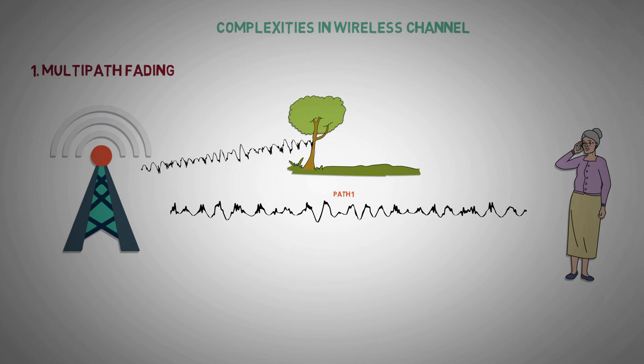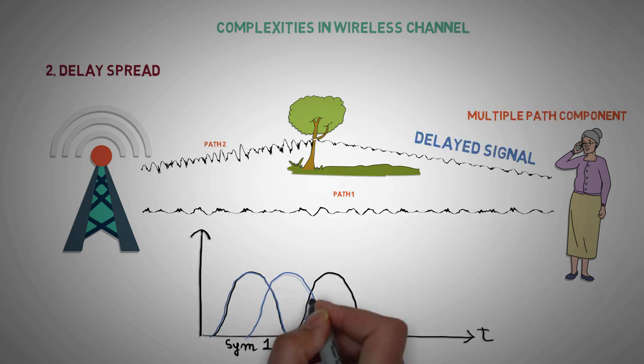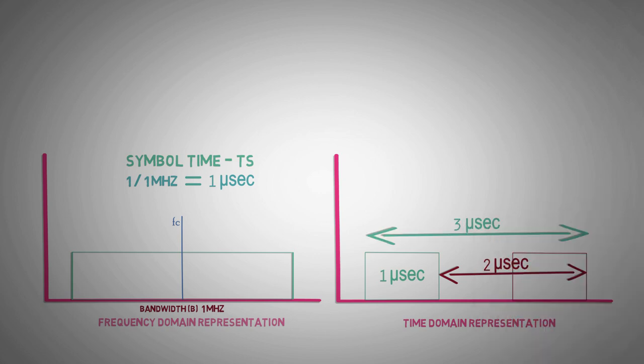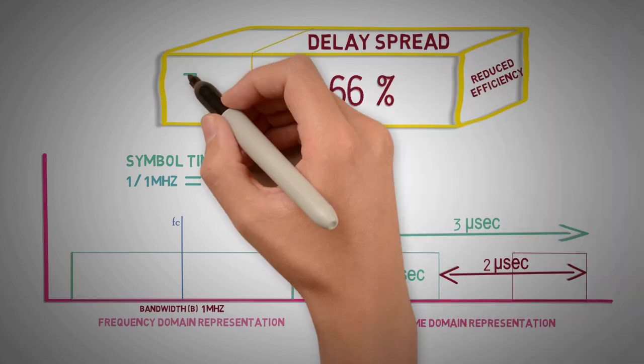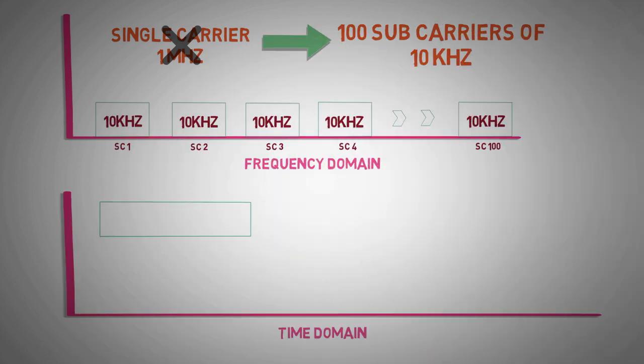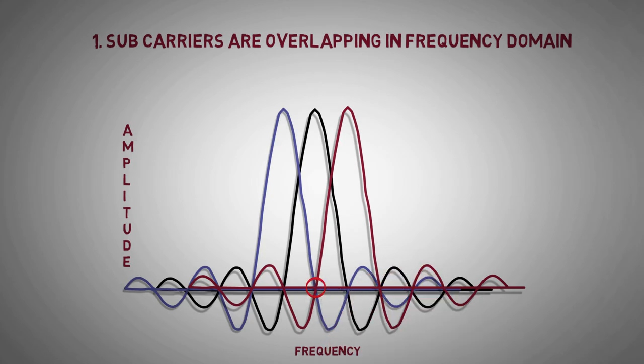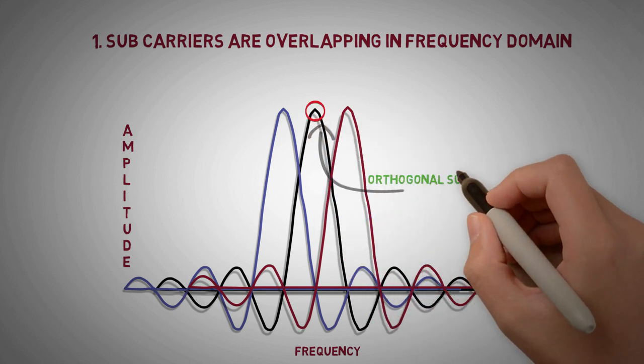So friends, in this video we have shown what are the limitations of wireless channel, how wideband single channel are inefficient for transmission. To overcome, how wideband single channel is divided into small sub-carriers and increase efficiency by reducing delay spread. How concept of orthogonality is introduced in FDMA and achieved multi-volt throughput.